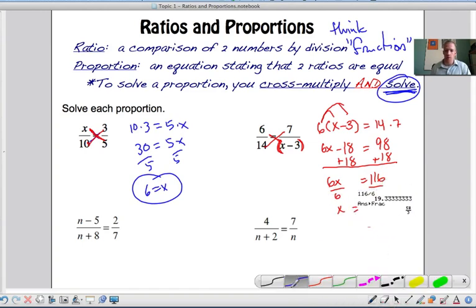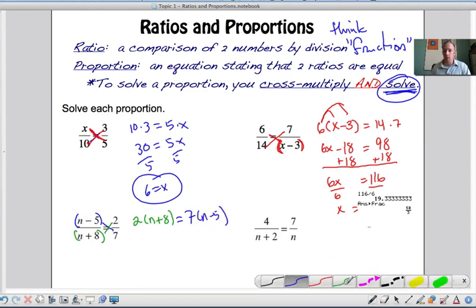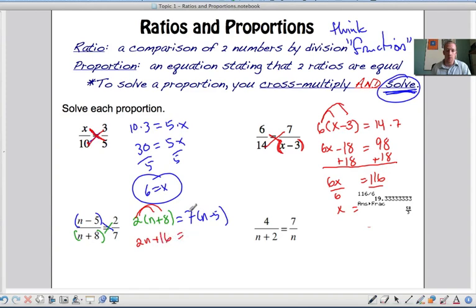So now we've got this. Now I have something crazy on the top. I gotta do this whole top times that bottom and I gotta do this whole top or whole bottom by that whole top. So 2 times n plus 8 equals 7 times n minus 5. And now we just follow the steps that we would normally follow to solve an equation like this. So distribute: 2n plus 16 equals 7n minus 35 because I distributed.